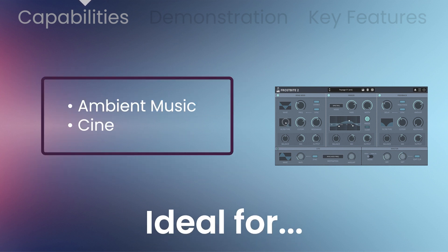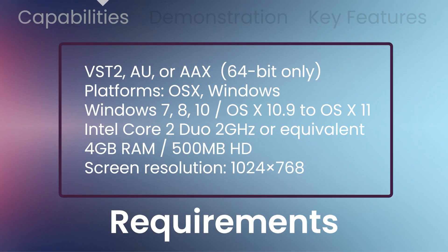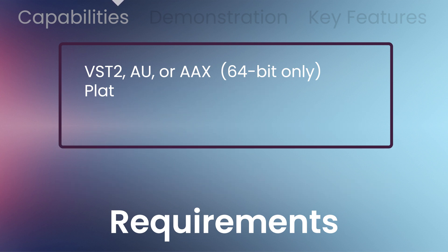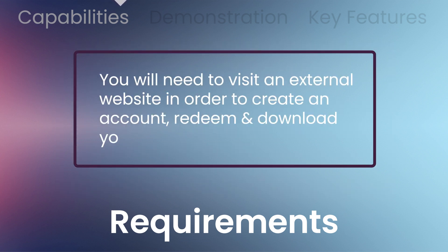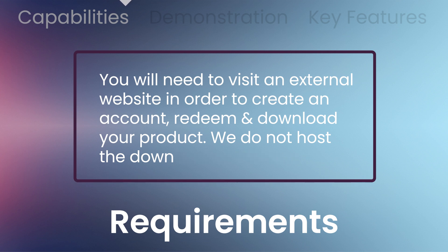Frostbite 2 is a simple but versatile effect that works well with ambient and cinematic music as well as sound design. Formats include VST, AU, and AAX 64-bit. Platforms are OSX and Windows. You'll be required to visit the Audio Thing website to redeem and download — we don't host the plug-in at VST Buzz.